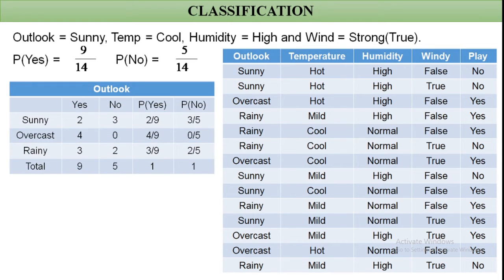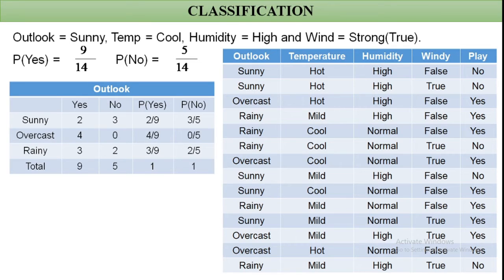Next, we prepare a table for the 'Outlook' feature, which has three categories: sunny, overcast, and rainy. For the sunny condition, out of 9 'Yes' cases, 2 are sunny, so P(Outlook=Sunny | Yes) = 2/9. Out of 5 'No' cases, 3 are sunny, so P(Outlook=Sunny | No) = 3/5.